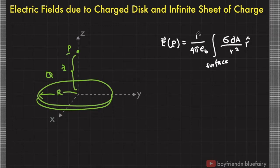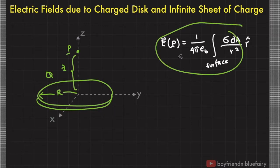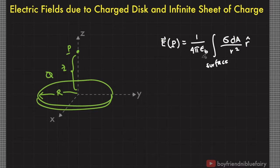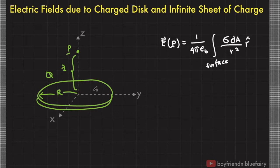I've written an equation derived from our previous video that gives us the electric field at point P due to a surface charge with surface charge density sigma. We will use this formula to find the electric field produced by a uniformly charged disk and later an infinite sheet of charge. To use this integral, we divide the disk into infinitesimal regions and integrate to consider all contributions.